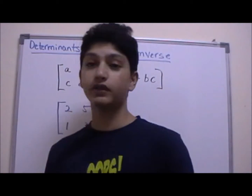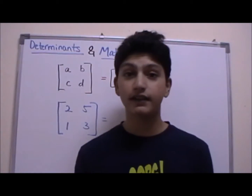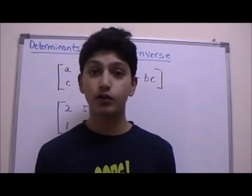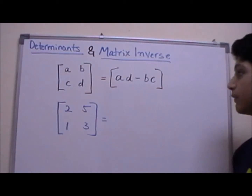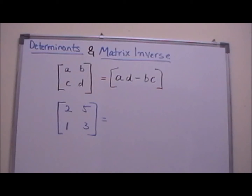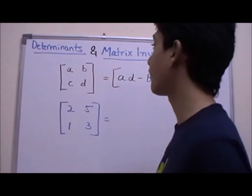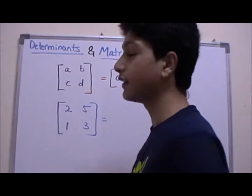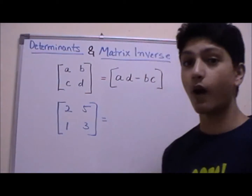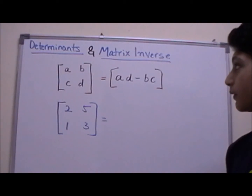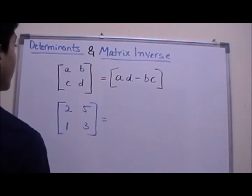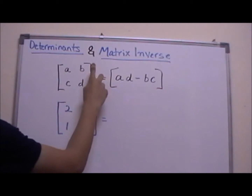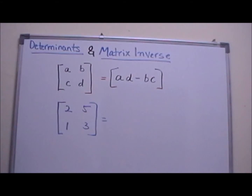In this section we will find the determinant and the inverse of a matrix. Let's start our discussion with finding the determinant. To find the determinant, you need a square matrix — specifically one that has two rows and two columns.